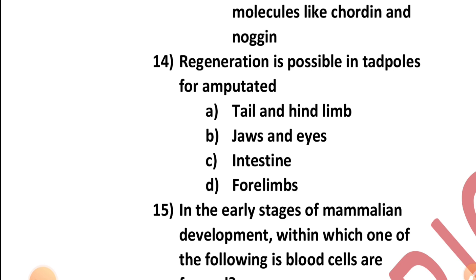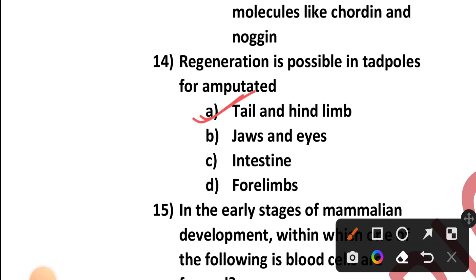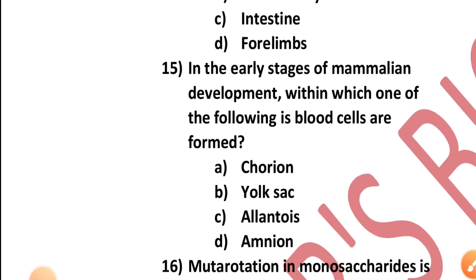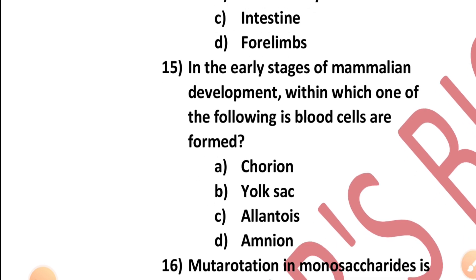Question number fourteen: Regeneration is possible in tadpoles for amputated — tail and hind limb, jaws and eyes, intestine, or four limbs? It is because of the tail and hind limbs. Option A is the correct answer.